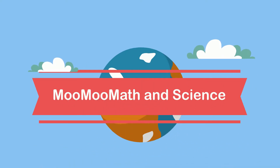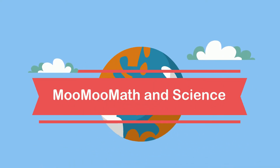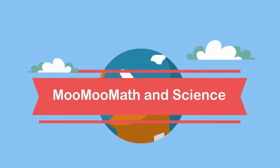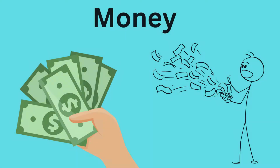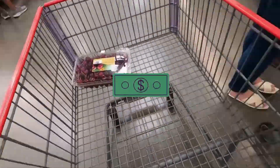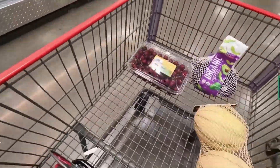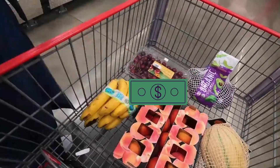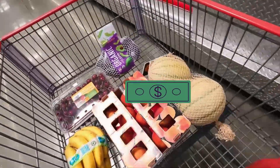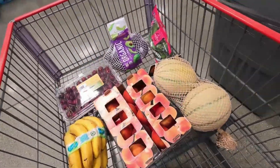Welcome to Moo Moo Math and Science. In this video, let's work on solving word problems that involve money — these will involve adding and subtracting. Keep in mind, when you purchase something you subtract from the grand total, and when you receive money you add to the amount of money you have. So let's get started with a couple word problems.